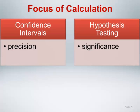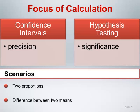Particularly for randomized trials, the hypothesis testing approach is most commonly used. The sample size calculation is based on the primary outcome and statistical method used to analyze that outcome. Common situations for a two-group randomized trial include two proportions or a difference between means.